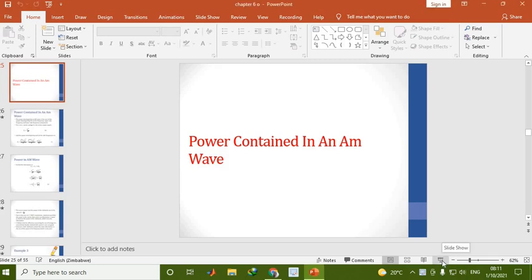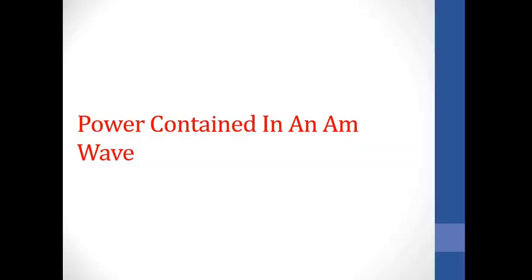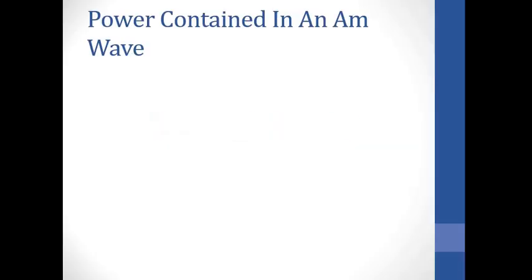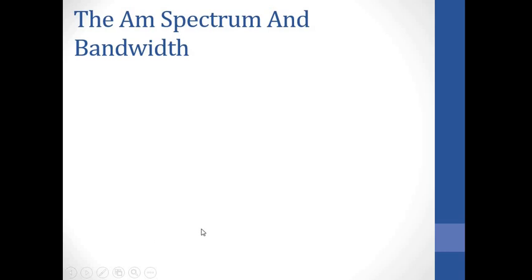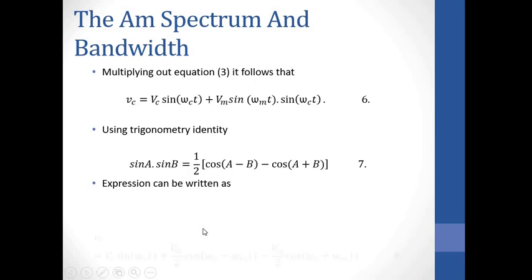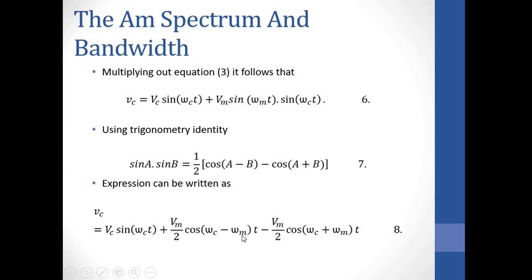Hello, this is part 2 on amplitude modulation. We are going to continue from slide number 25, power contained in an AM wave. As we noticed in the previous slide, for our AM spectrum we have three components: the carrier frequency, the lower side frequency, and the upper side frequency. Now we want to take a look at these voltages.